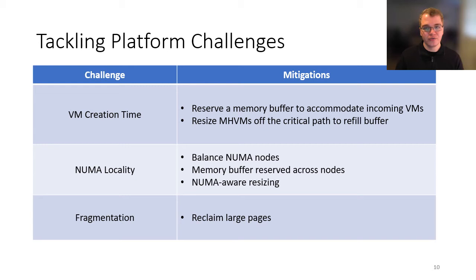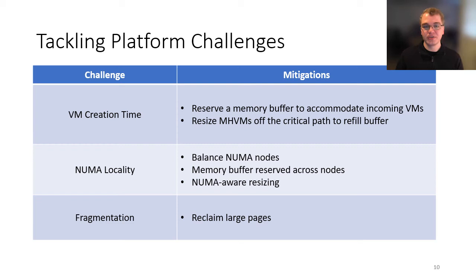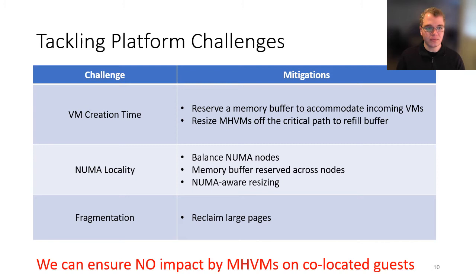To fix NUMA locality, we found that balancing memory between NUMA nodes was the most effective way of preventing NUMA spanning. We accomplish this by ensuring our memory buffer allocations are roughly evenly mixed between the two NUMA nodes on the server, and we maintain this with NUMA-aware resizing — exposing the virtual NUMA topology in the MHVM so the host can request memory back from specific NUMA nodes. For fragmentation, we simply require the MHVM to only return large and contiguous pages that match the host mappings; if it doesn't, it can be evicted.